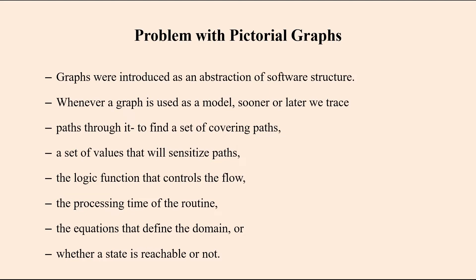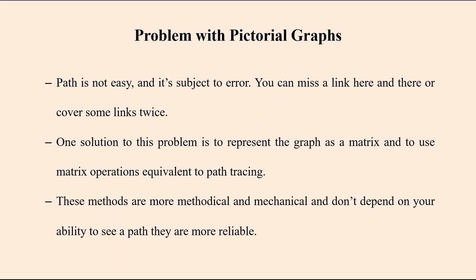Normally these graphs were introduced as an abstraction of the software structure. Whenever a graph is used as a model, we have to trace various kinds of things: first, paths from one node to another node; the collection of links that leads to a path from the initial node to the end node; the set of values that sensitize the paths; the logic function which controls the flow; the processing time of the routine; and the equations that define the domain and whether a particular state is reachable or not.